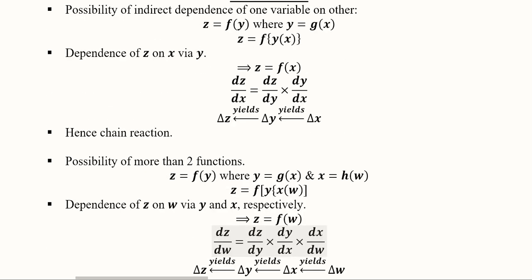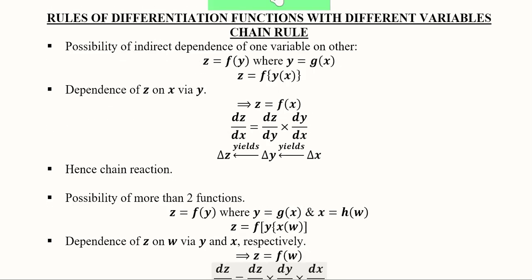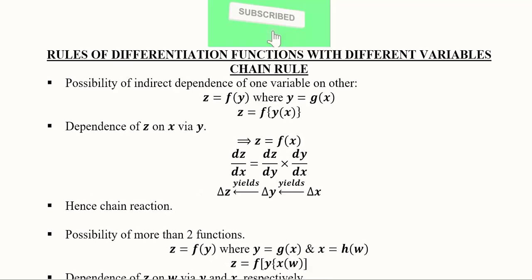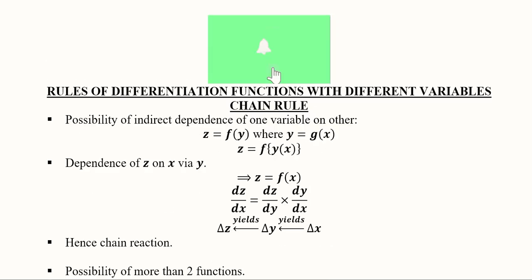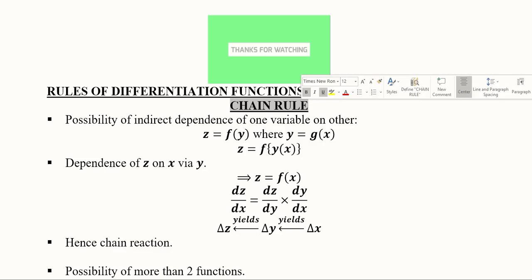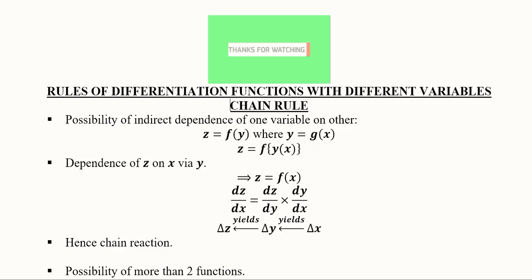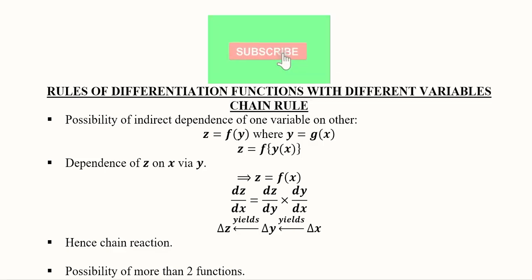This was the numerical example. We also covered the symbolic interpretation for two functions and for more than two functions. This was the chain rule, which is applied in economics, and in the next video we will see its economic application.